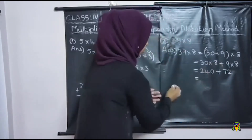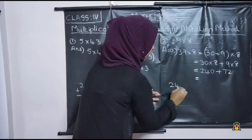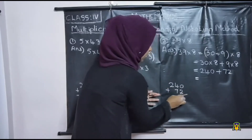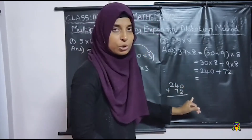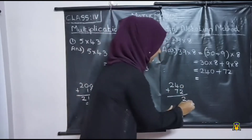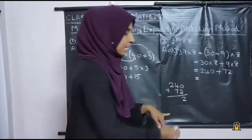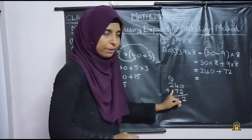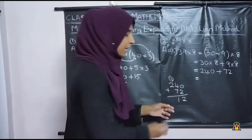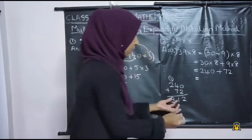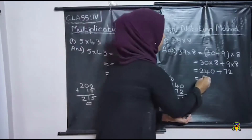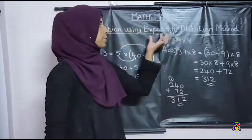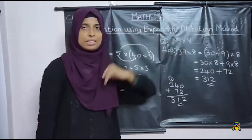Then what is 240 plus 72? What is 0 plus 2? It is 2. Then what is 4 plus 7? It is 11. One carry over. Then there is no number here, so what is 2 plus 1? It is 3. So 312. We get the product as 312 using the expanded notation method.